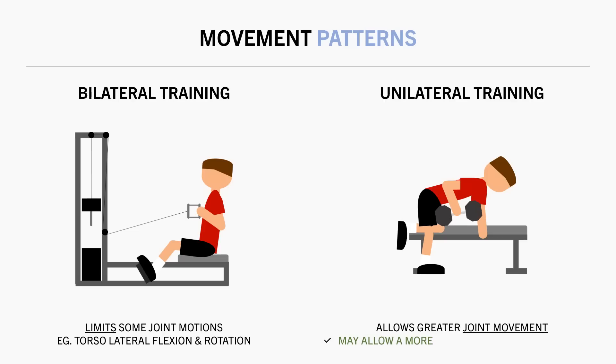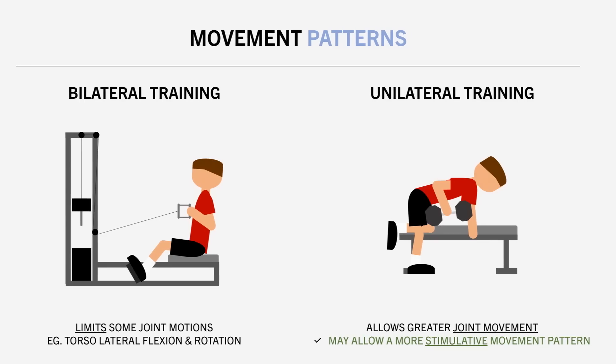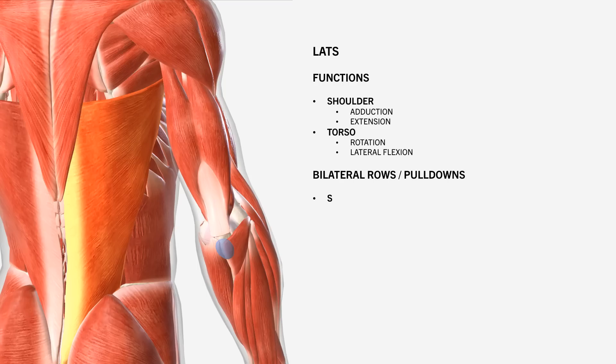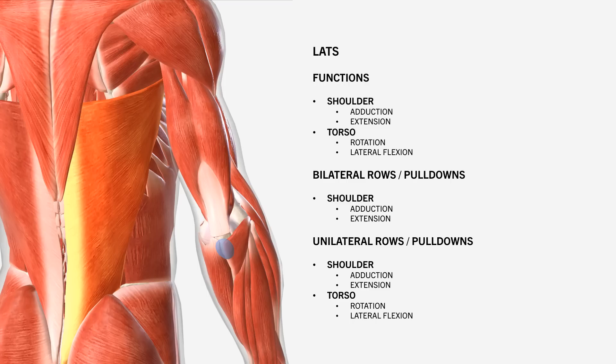Whereas unilateral movements allow us to move our joints through more planes of motion which could possibly be beneficial for muscle growth. In general we want to train a muscle based on the movements it is responsible for. So in some cases bilateral exercises may limit what movements the muscle naturally produces and in theory we might get a better stimulus if the exercises we perform fall more in line with the movements that the muscle produces. For example the function of the lats are to adduct and extend the shoulder and also to laterally flex and rotate the torso. However when performing bilateral rows or pull down variations we are only limited to the adduction and extension movements.